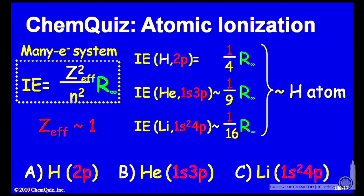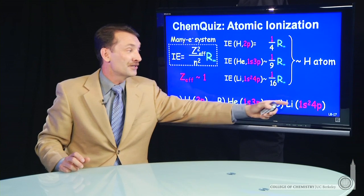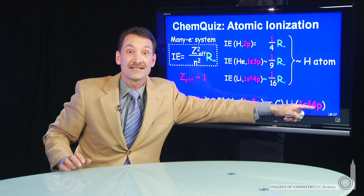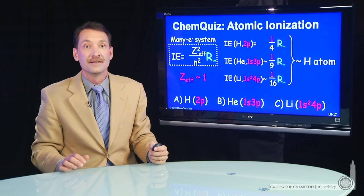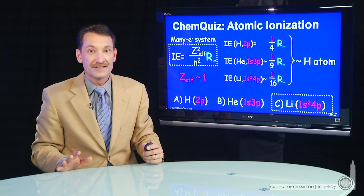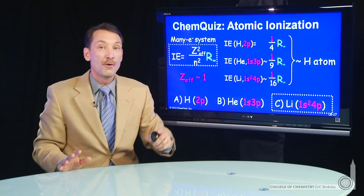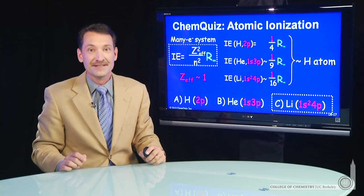These are all hydrogen-like in their ionization energies. So hydrogen-like ionization energies, of course, the highest N will be the easiest to ionize. So lithium atoms, in this case, in the 1s2 4p state, are the easiest to ionize.